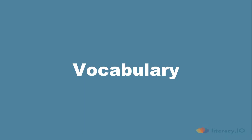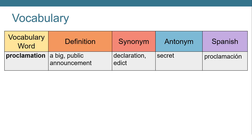Before we begin reading, let's go over some important vocabulary that will help us better understand the passage. Our first word is proclamation. A proclamation is a big public announcement. A synonym, or word that means the same, is declaration or edict, and an antonym, or opposite, might be secret.